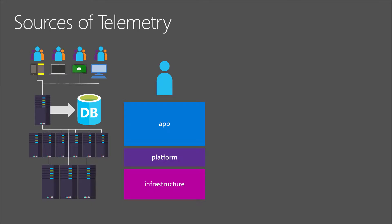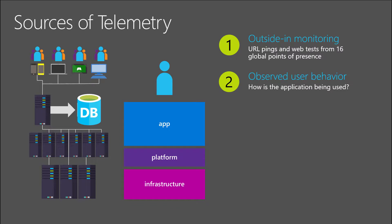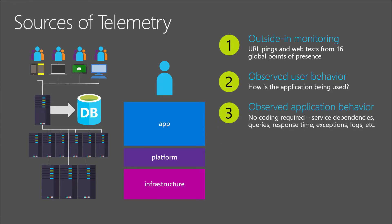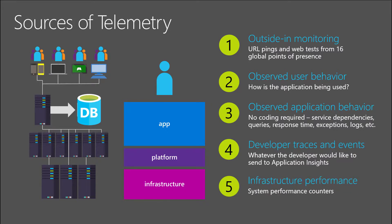There are five ways Application Insights collects telemetry. First, the outside-in approach: we can ping from 16 Azure resources throughout the world to measure a synthetic transaction and see how our application performs from different parts of the world. Second, user behavior: we can see what platform users are on — mobile or desktop — and what OS or mobile version they're using, allowing us to fine-tune based on user behavior. Third, application behavior: by injecting App Insights we can capture all logs and data analytics. Fourth, developer traces and events: we can set specific events or send all events and logging data to App Insights.